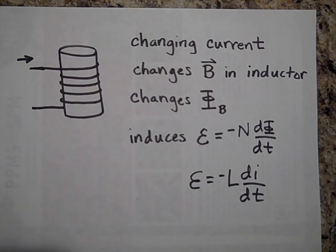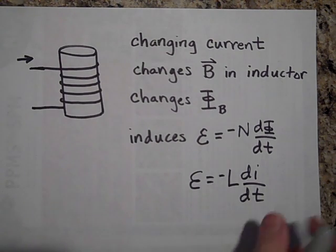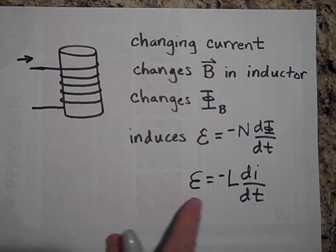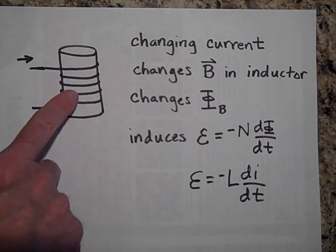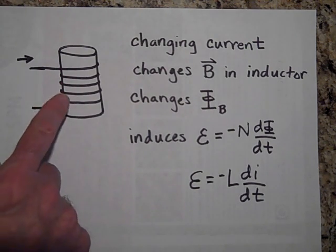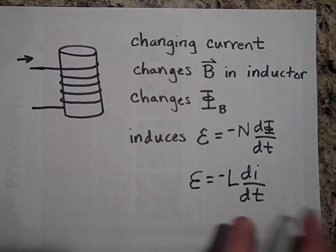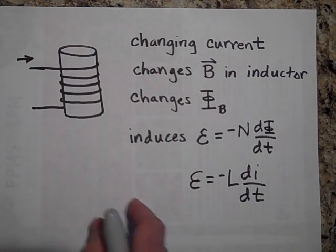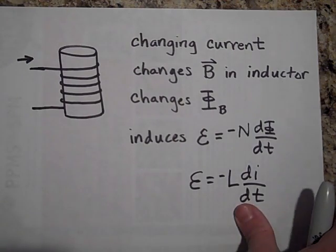You need to understand that when i changes, whenever there's a changing i in here, this tries to resist the change in that current by inducing in itself an EMF.